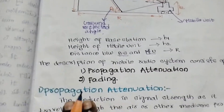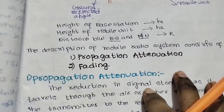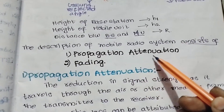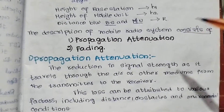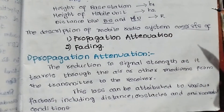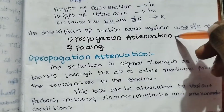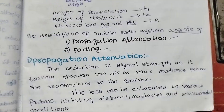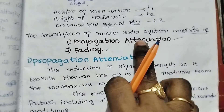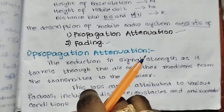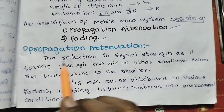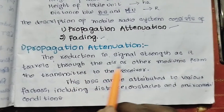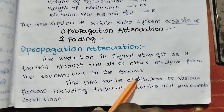Like the description of the mobile radio system, it consists of section 2.1: propagation attenuation and fading. Propagation attenuation is the reduction in signal strength as it travels through the air or other mediums from one transmitter to the receiver.